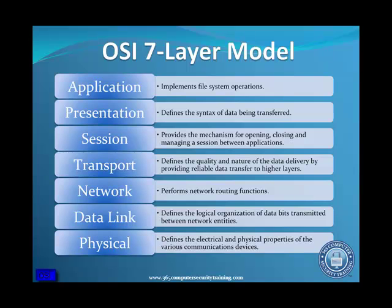The seven-layer model of the ISO OSI architecture is a familiar framework for layered network protocols and is a useful means for discussing network security. The OSI model passes control through the layers from top to bottom where it then